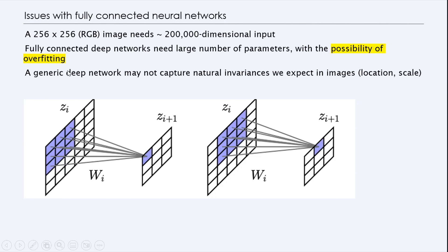Some of the issues with large neural networks is that if you take a 256 by 256 RGB image, you have more than 200,000 dimensional input. This is a very large number. So fully connected deep neural networks need large number of parameters with the possibility of overfitting. You're trying to train too hard to fit into the picture itself. Instead, if you try to fit into the images or the features of the picture, that might do a better job. So a generic deep network may not capture the natural invariances we expect in images, location and scale.